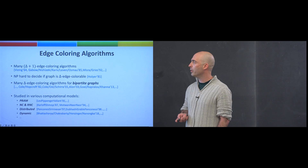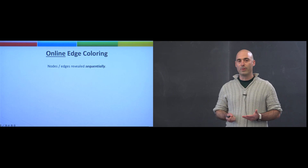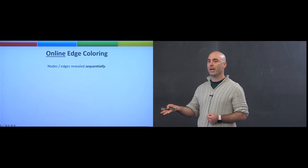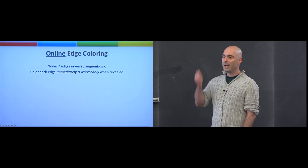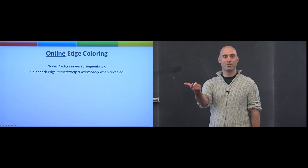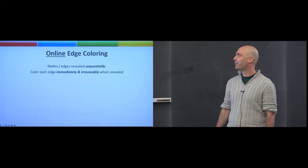The exact model we'll be looking at today is online algorithms. The input is not a given graph all at once — it is revealed incrementally, piece by piece, either node by node or edge by edge. The easiest setting to think of is edge arrival, which is the most general and hardest but easiest to understand. I give you an edge, and now you have to decide what color to assign it — immediately and irrevocably.